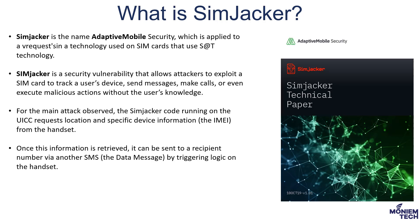In 2019, a company called Adaptive Mobile Security uncovered a new and previously undetected vulnerability and associated exploits called Simjacker, and published a report detailing the attack. It is a security vulnerability that allows the attacker to exploit a SIM card to track a user's device via SMS, make a voice call, or even perform actions without any knowledge from the user. The two main pieces of confidential information Simjacker can obtain are the location and IMEI. Once this information is retrieved, it can be sent to a recipient number by another SMS by triggering logic on the handset.